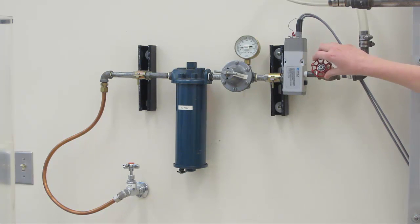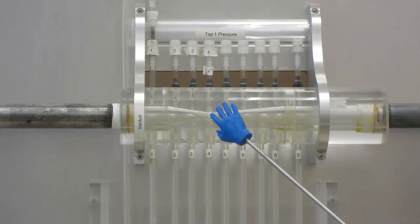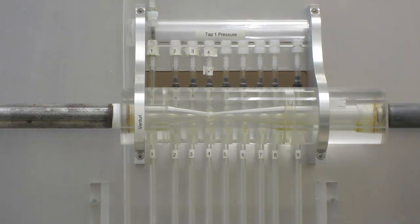As you do this, flow is going through the pipe into the Venturi shown here. The Venturi tube has pressure taps along its length, as you can see. These pressure taps are wet manometers.